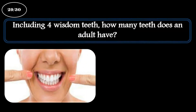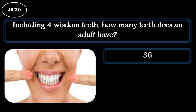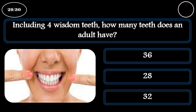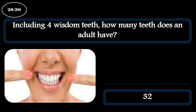Question 29. Including four wisdom teeth, how many teeth does an adult have? A: 36. B: 28. C: 32. The correct answer is 32.